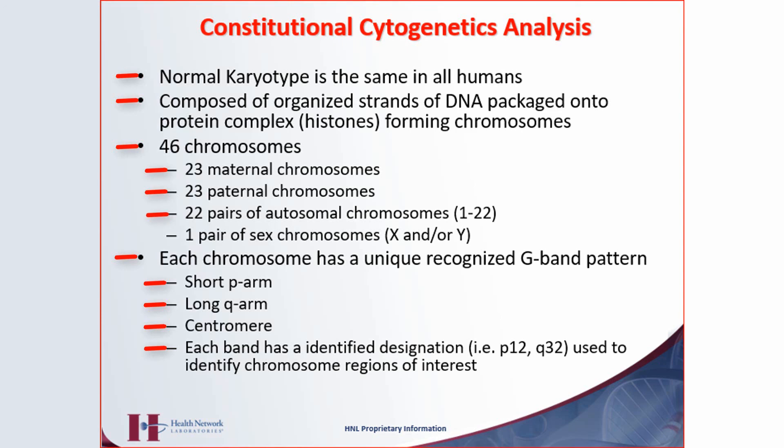They are set up in pairs. They are labeled chromosome 1 through chromosome 22, and the X and Y. The 1 to 22 are called autosomes — everyone has the same autosomes, there's no difference. The sex is determined by the XX and the XY. These are called the sex chromosomes.